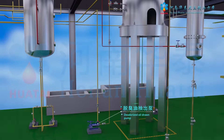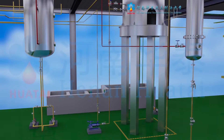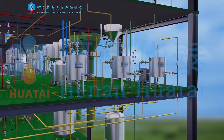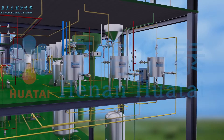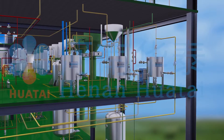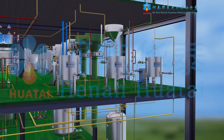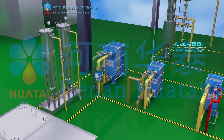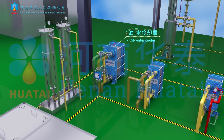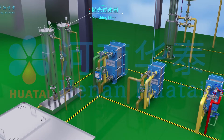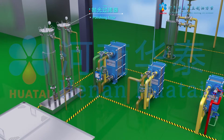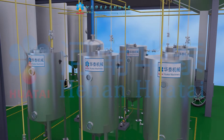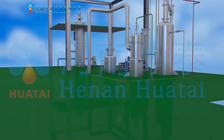The deodorization oil is transported to the oil-oil screw plate heat exchanger by the extraction pump to exchange heat. The oil enters the oil-oil plate heat exchanger and finally comes into the oil-water cooler. After polishing by the polishing filter, the cooled deodorization oil enters the deodorization oil temporary tank, and is then pumped to the product oil tank area or filling plant.